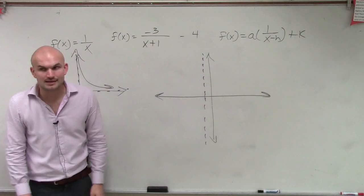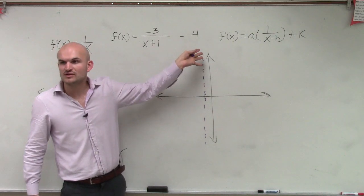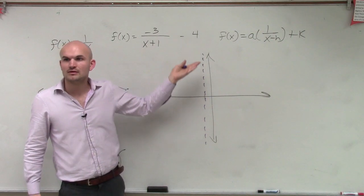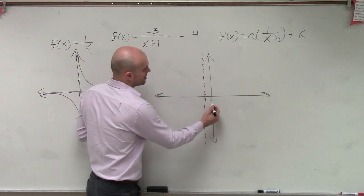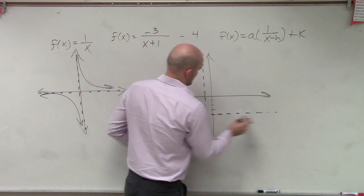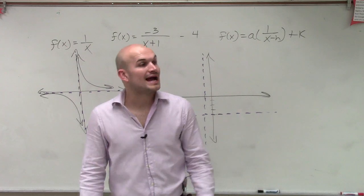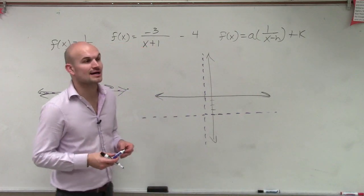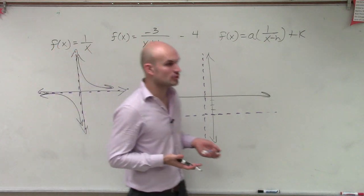So the next thing is, now we look at the minus 4. Minus 4 tells you to shift the graph down 4, right? So I'm going to go down 4 units, 1, 2, 3, 4. And now, your asymptotes we represent as dotted lines. Those are going to be the lines that your graph is going to approach.